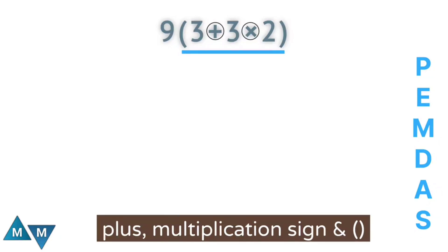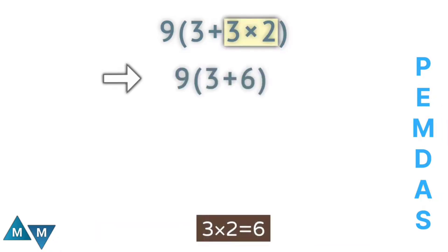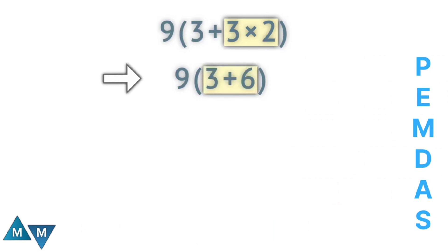We're going to simplify everything in the parentheses first. Inside the parentheses, we have a plus sign and a multiplication sign. Since multiplication has a higher priority, three times two will be our first move, which equals six. We're still working inside the parentheses, so we have six plus three, which equals nine.